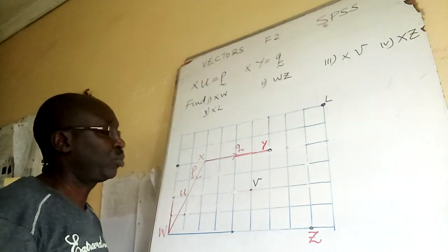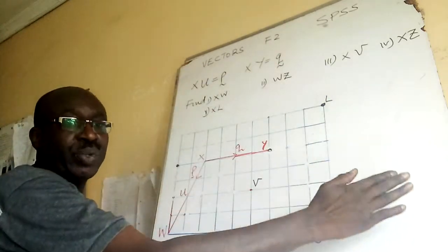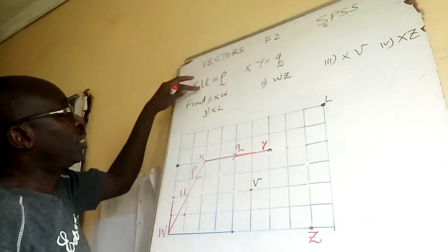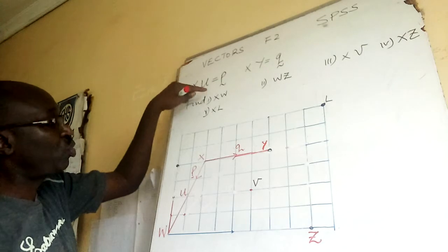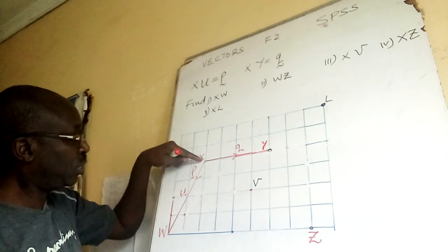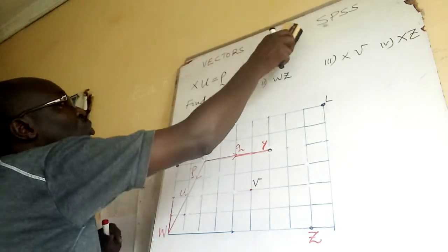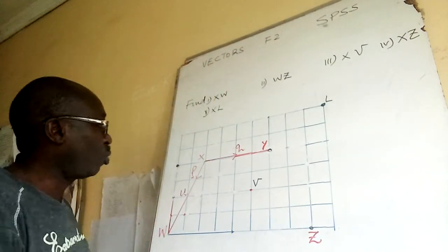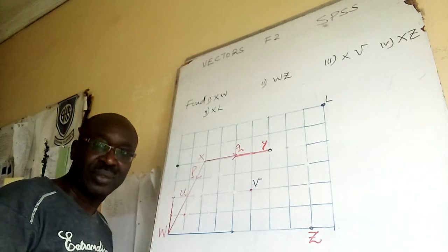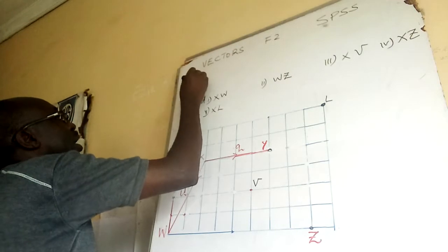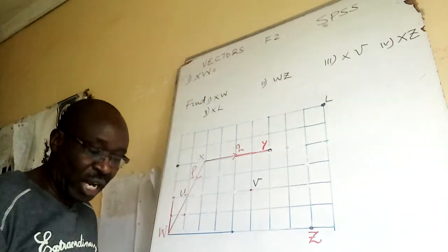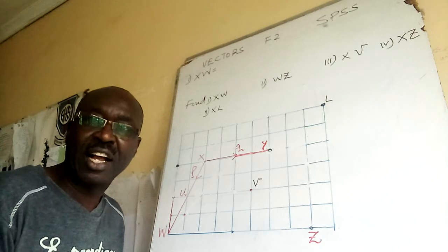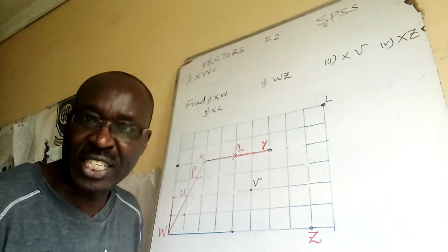I'll grab this so that I have my working space up here and I want everything on the board. X to U is P, and X to Y is Q. So we want to find XW — from X to W. I am testing your ability of identifying equivalent vectors.